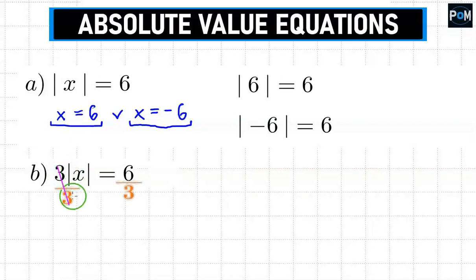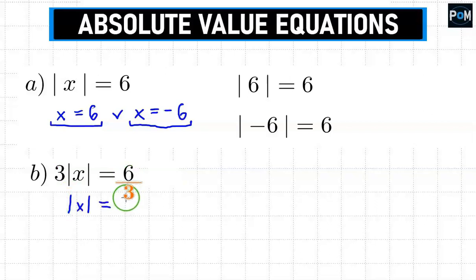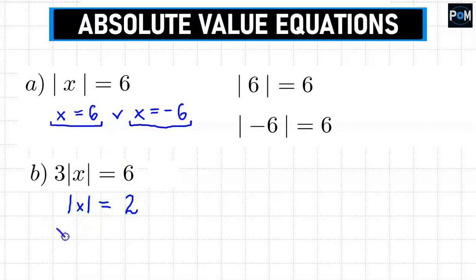On this side, the 3's cancel out so that only the absolute value of x remains. And on the other side, 6 divided by 3 gives us a result of 2. Now, similar to example a, when will the absolute value of something be equal to 2? When x is equal to 2, or when x equals negative 2. This equation also has two solutions.